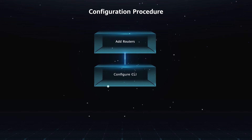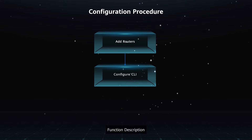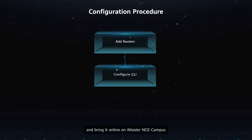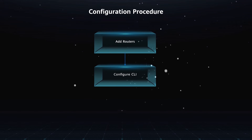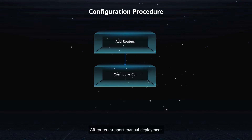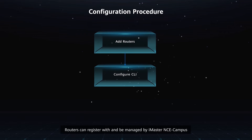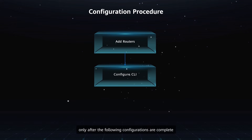Configure the routers using the CLI. Function Description: You can manually configure an AR Router and bring it online on iMaster NCE Campus. Application Scenarios: AR Routers support manual deployment. Routers can register with and be managed by iMaster NCE Campus only after the following configurations are complete.